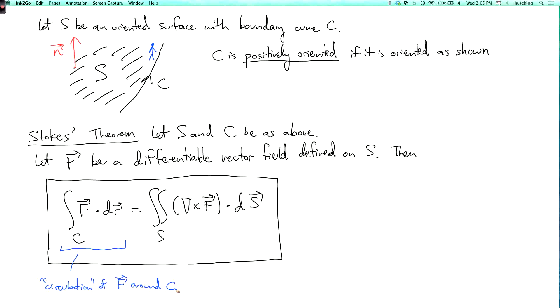Note by the way that C is closed, that the boundary curve of a surface is always closed. And the curl, well this measures rotation of F. So it's a vector which points in the direction which is an axis around which F is rotating in some sense.